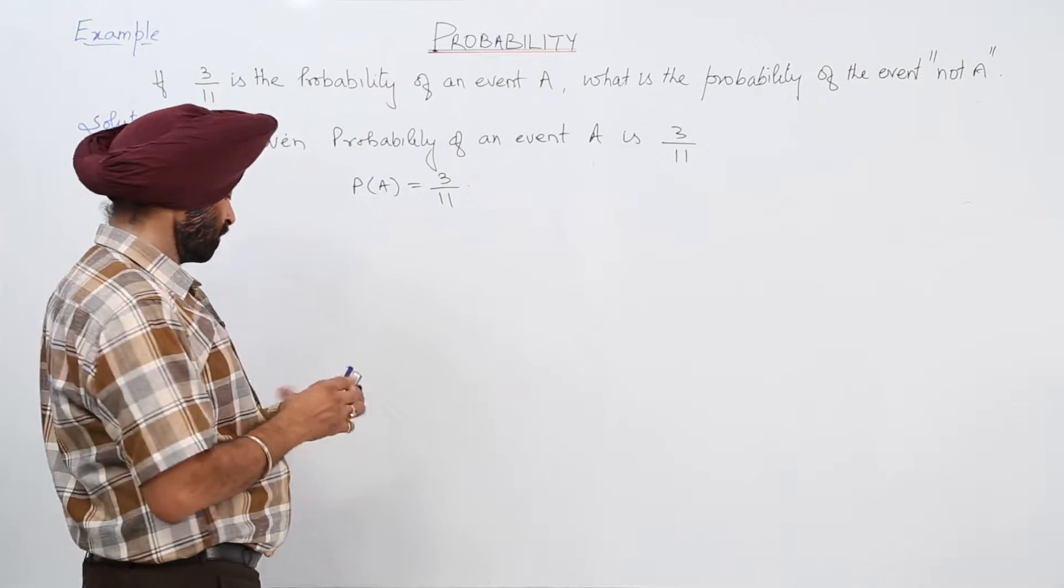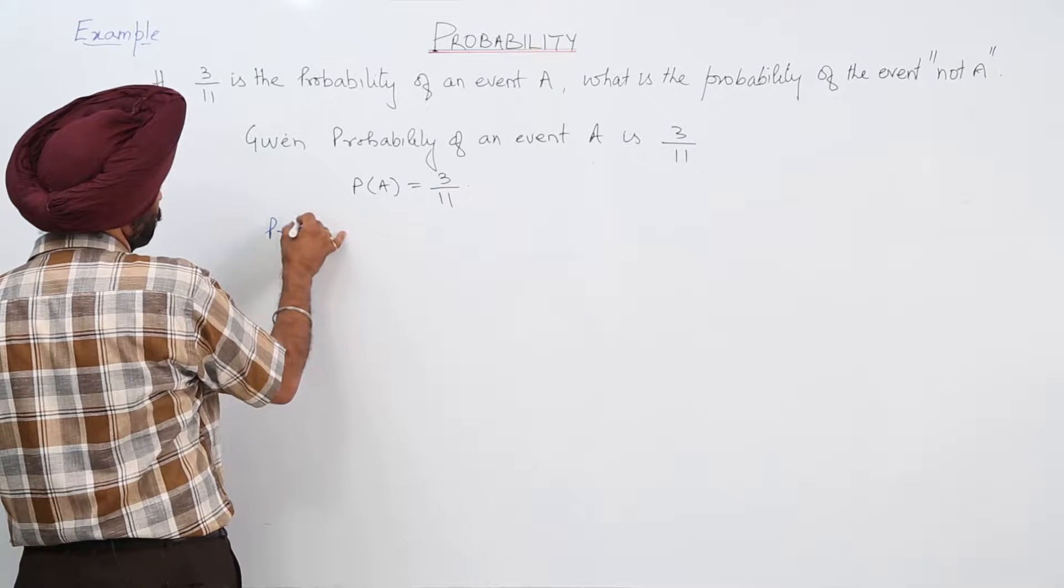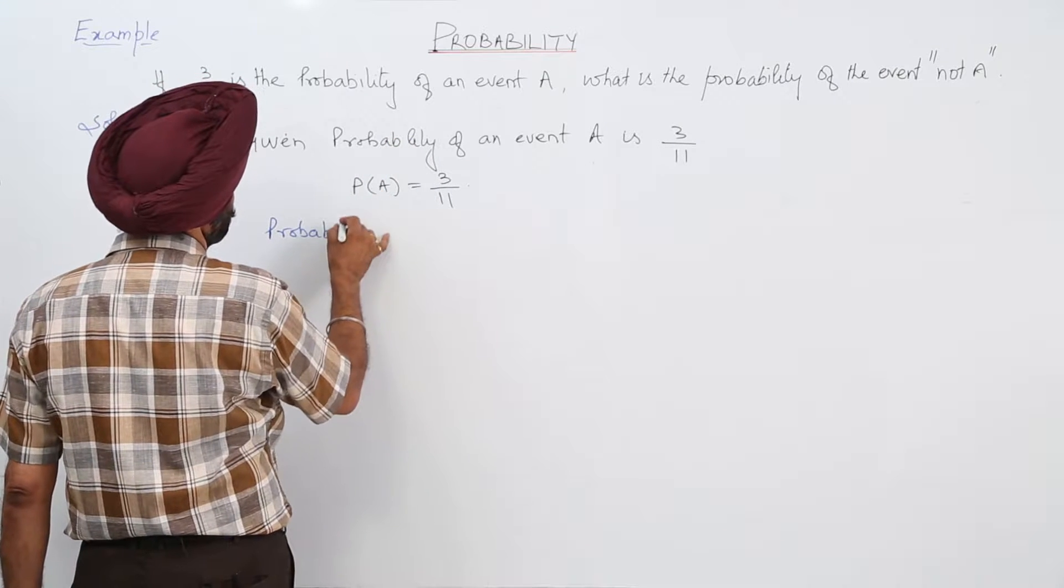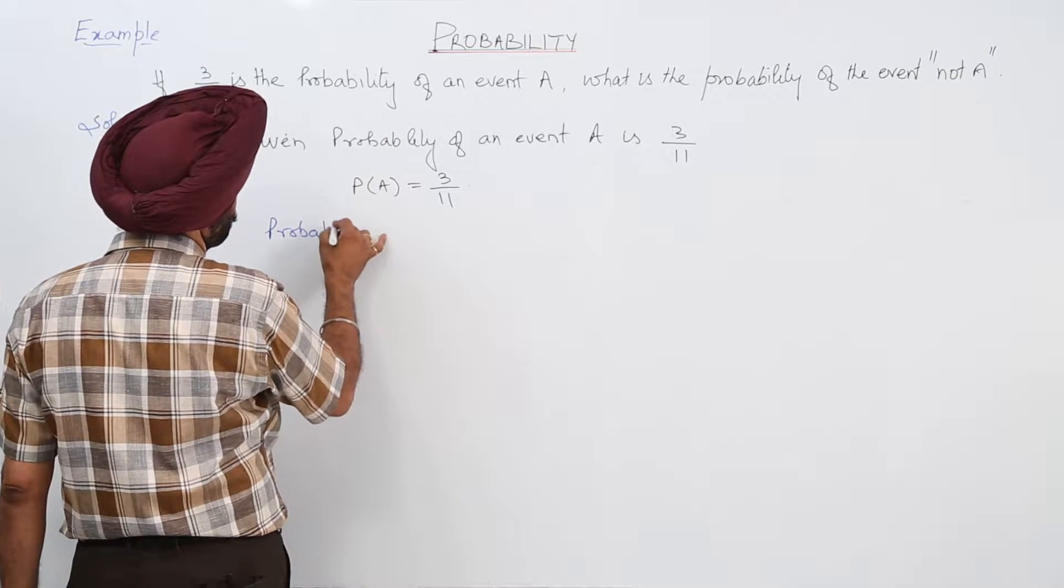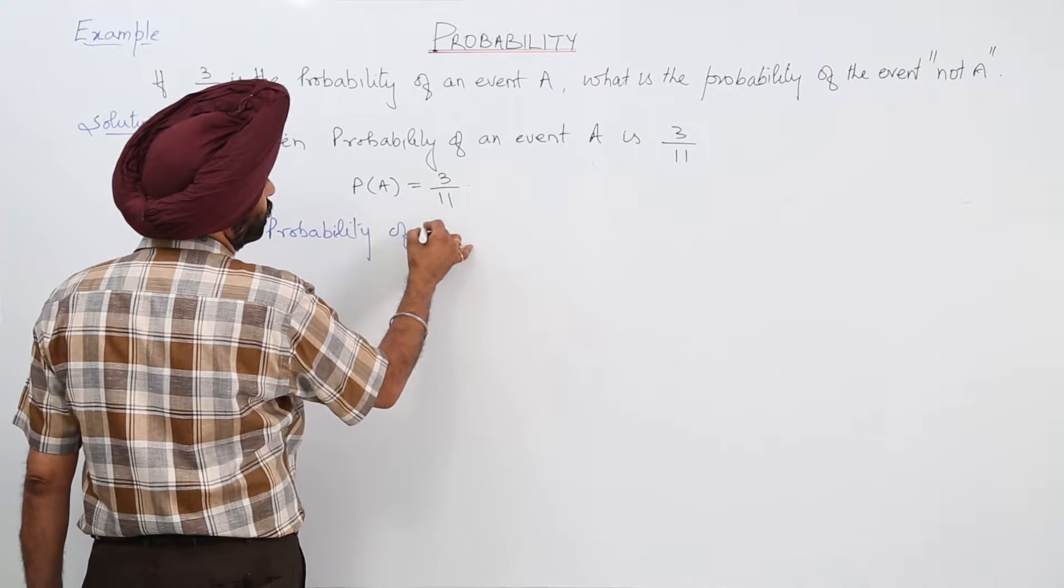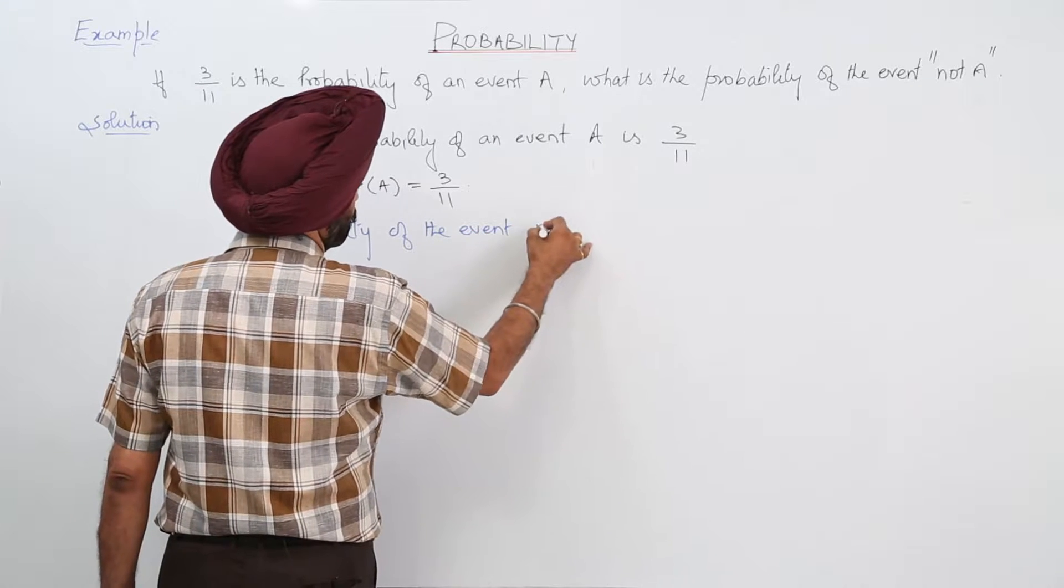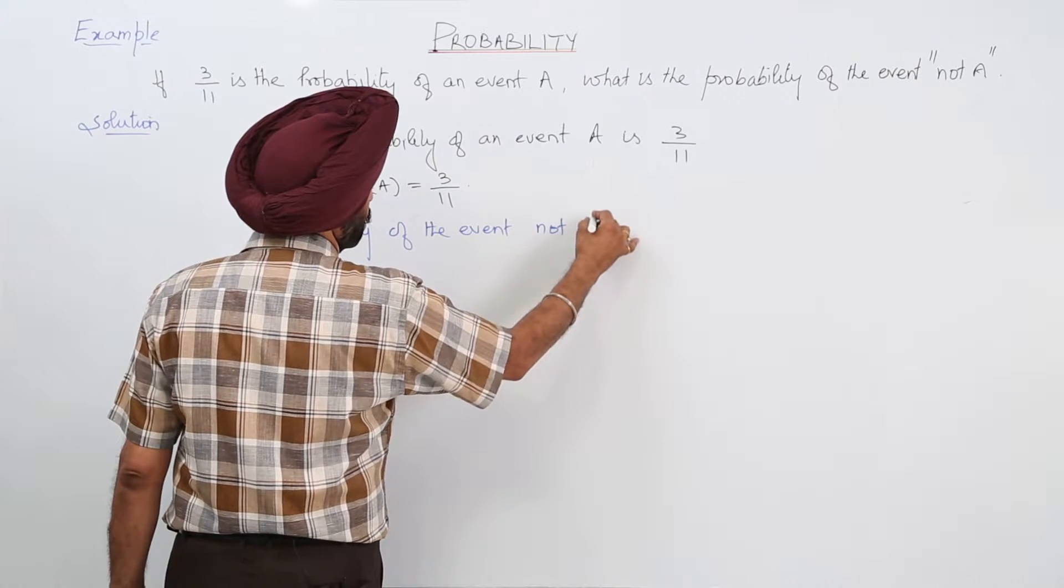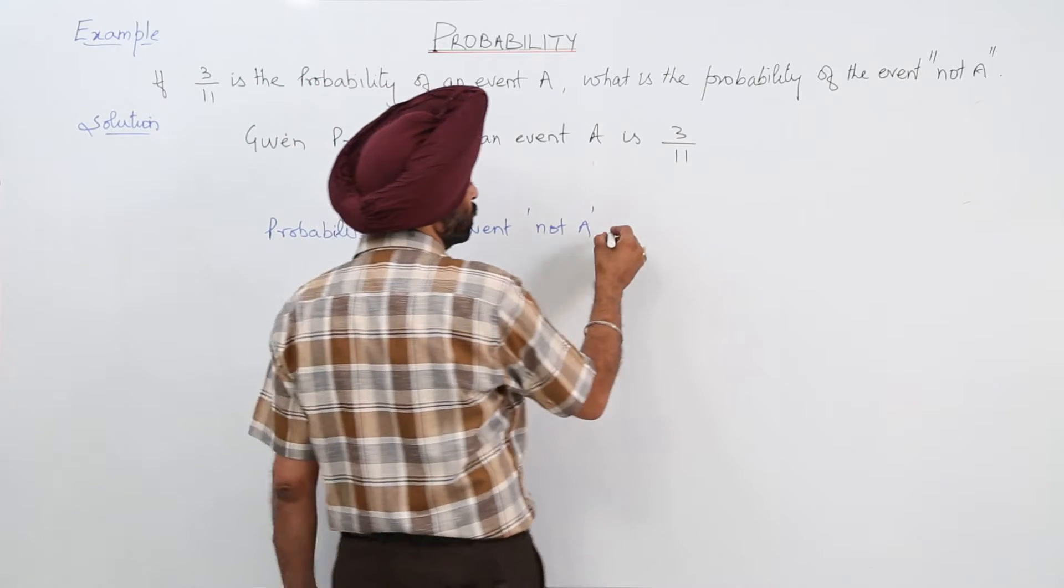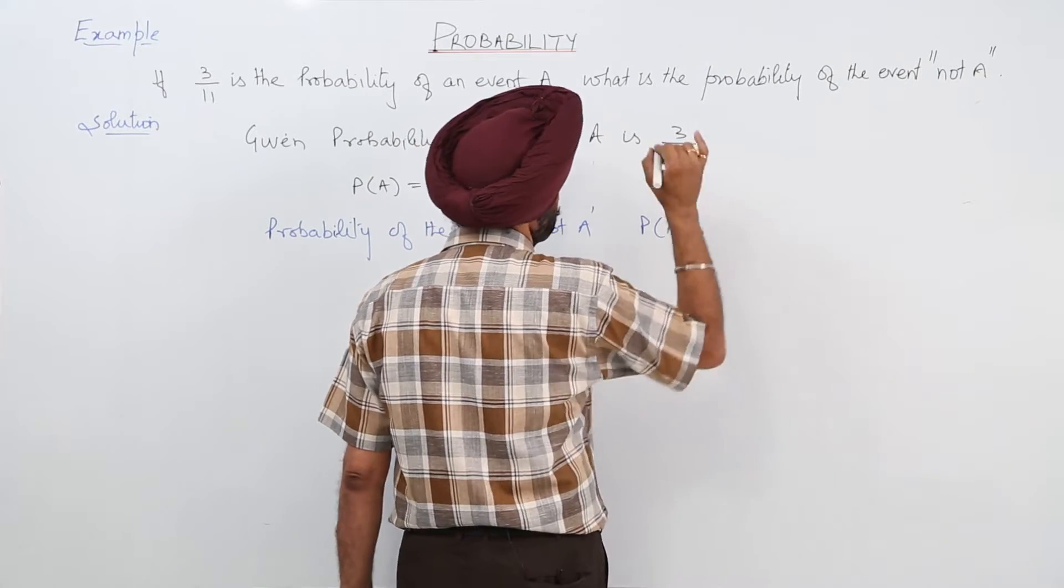Probability of the event not A. How is not A denoted? It is denoted as P(not A) like this.